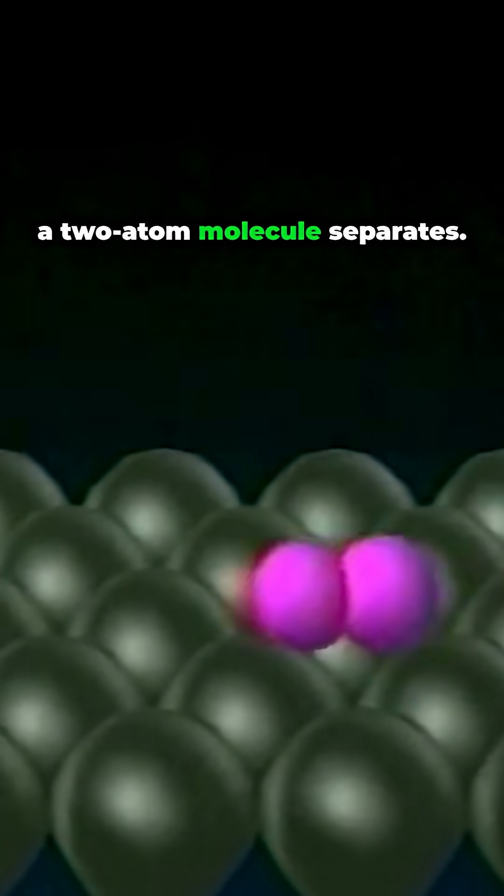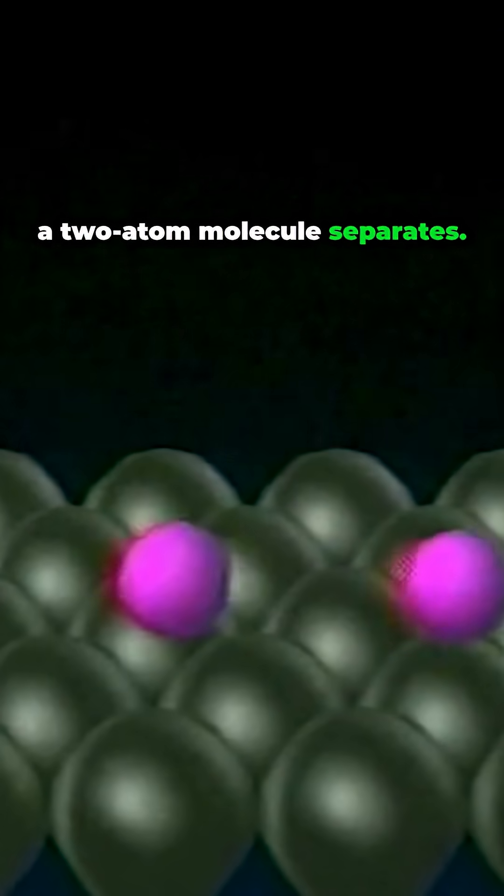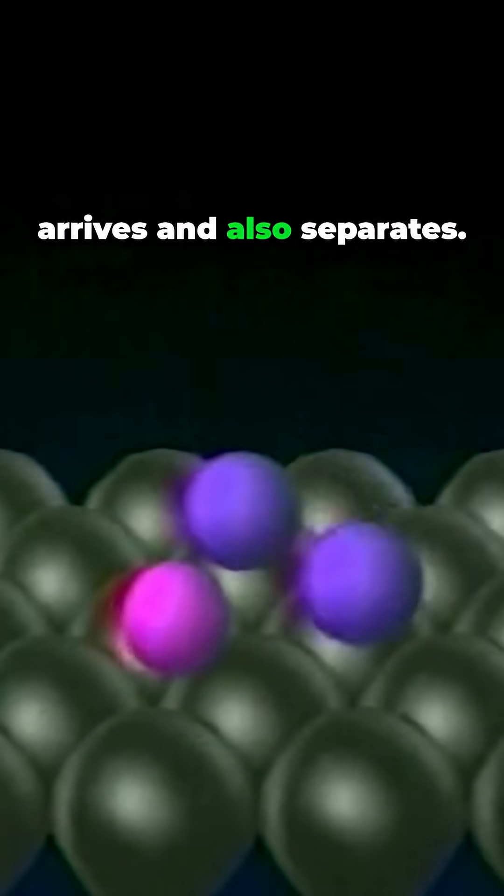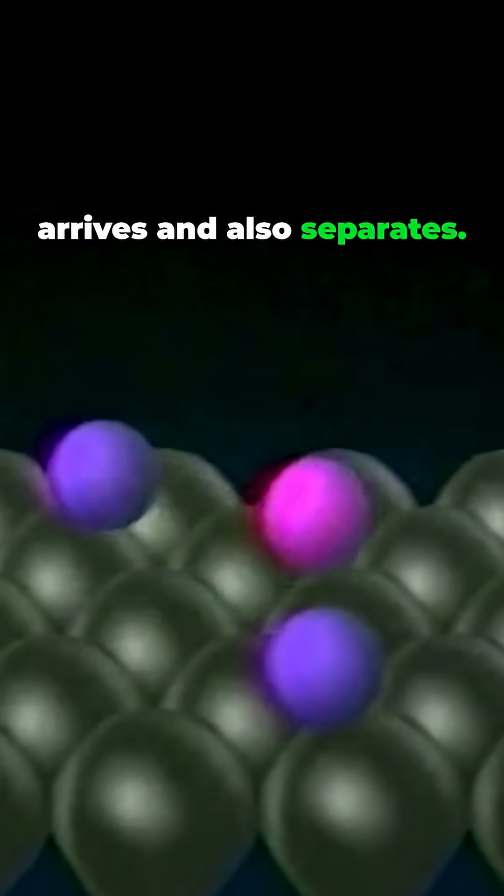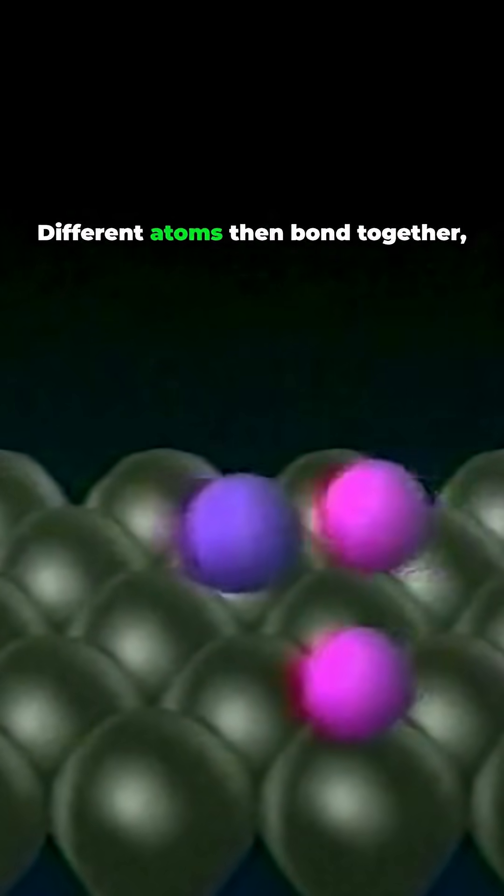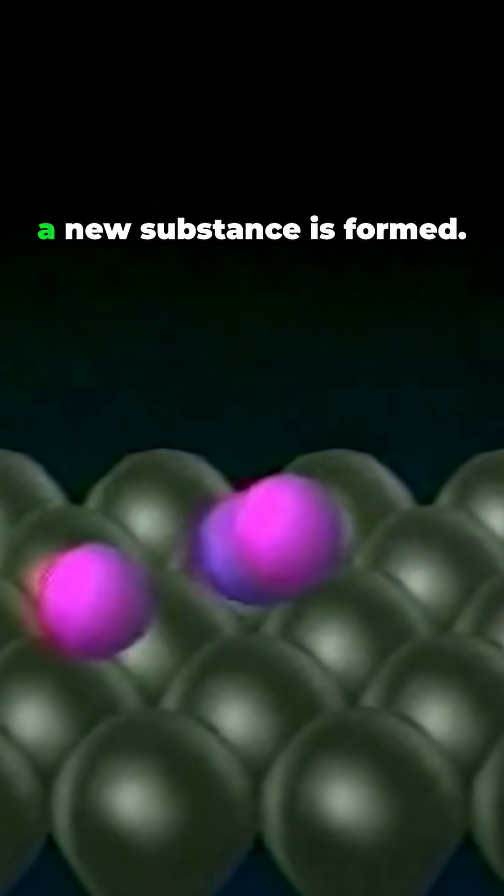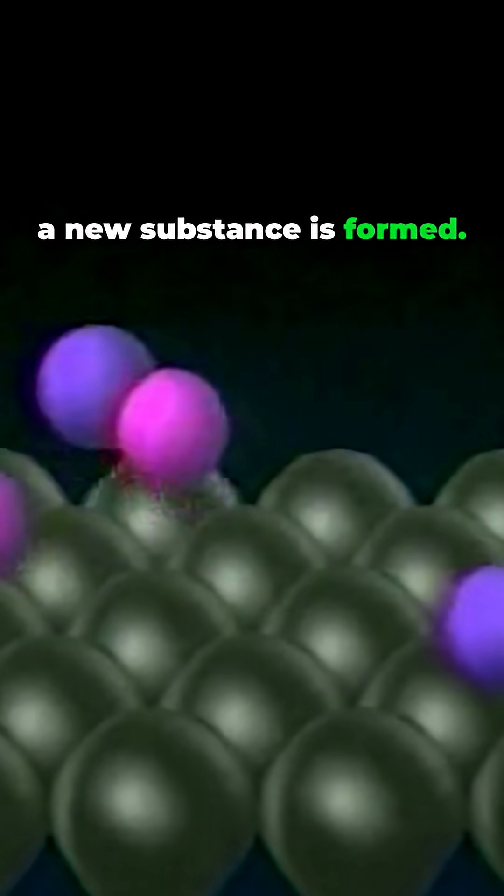Here on a surface, a two-atom molecule separates. The molecule of another substance arrives and also separates. Different atoms then bond together and a transformation takes place. A new substance is formed.